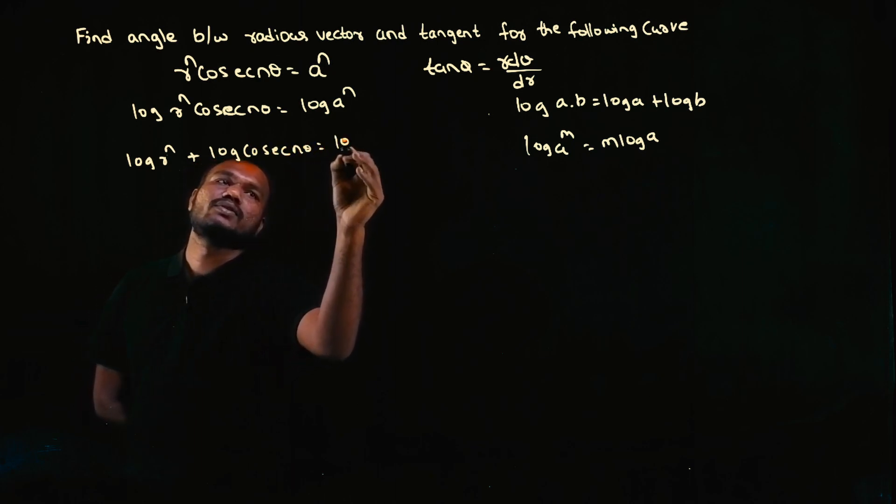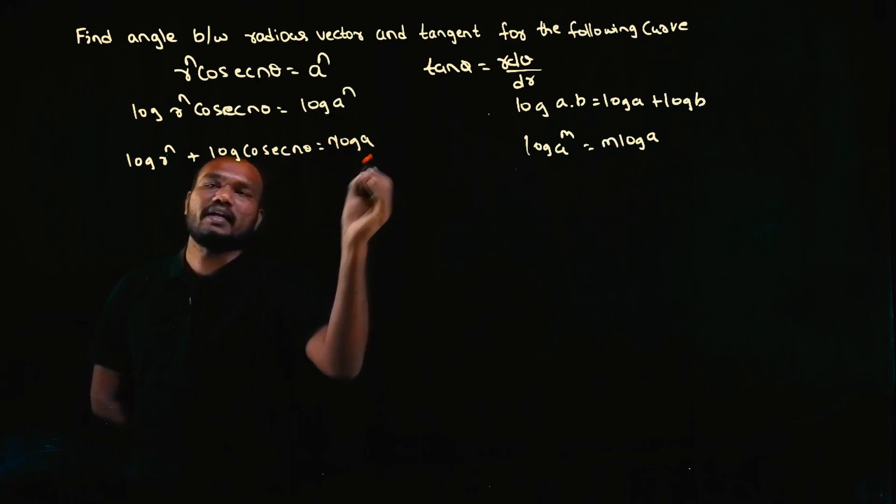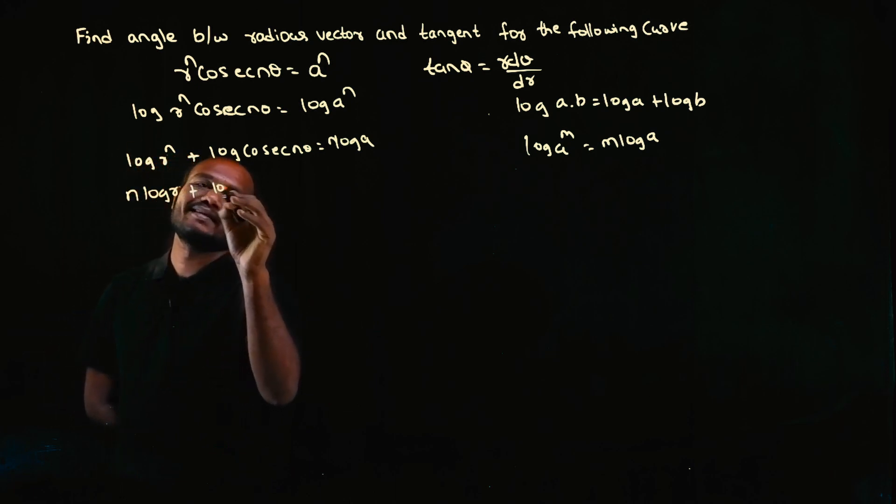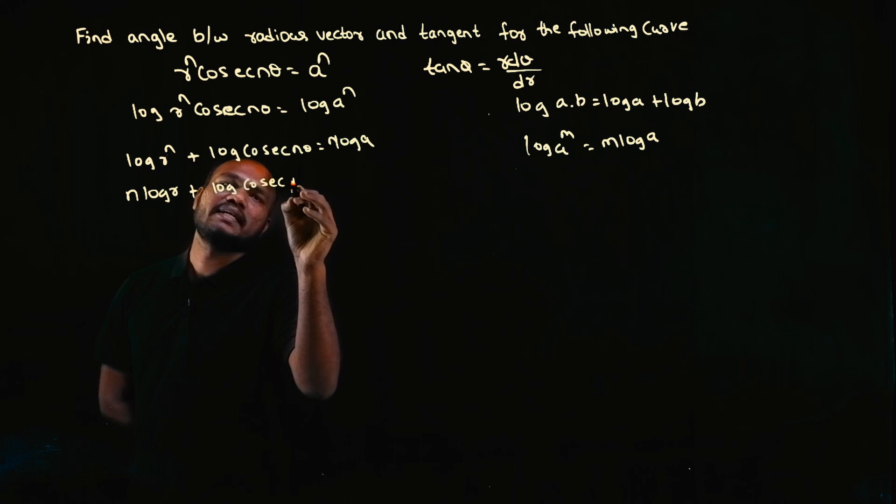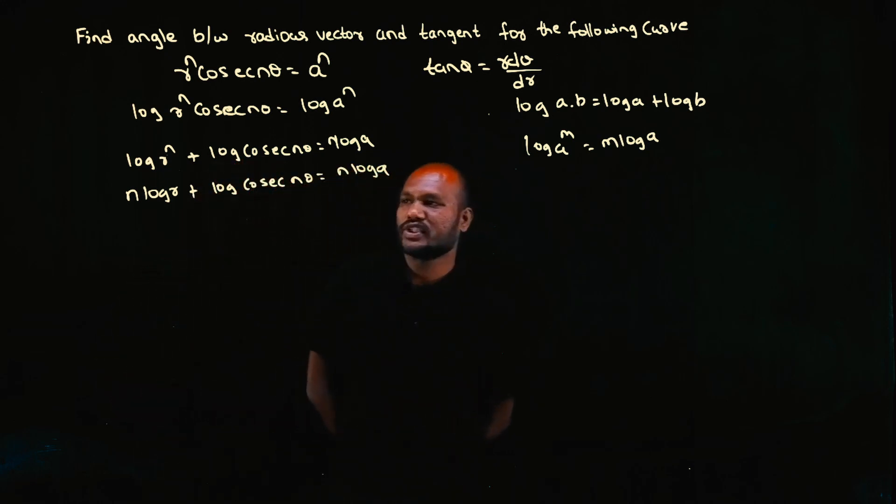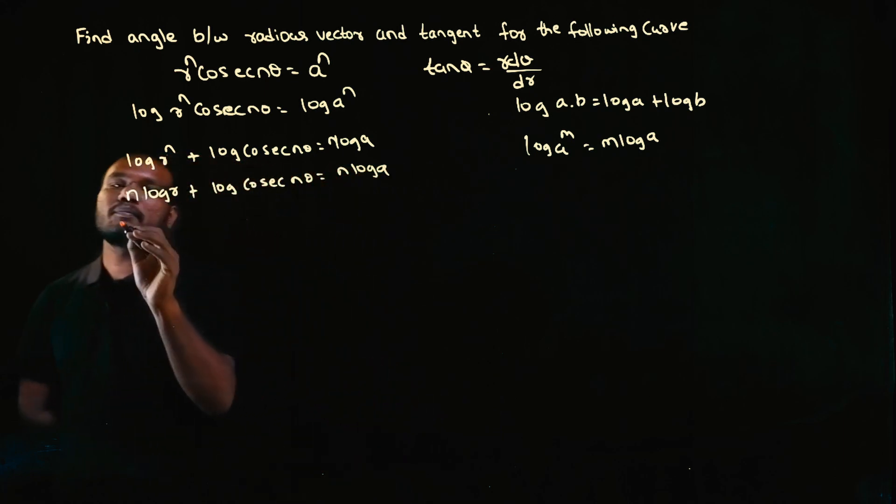So we'll bring the powers in front: n×log(r) + log(cosec(nθ)) = n×log(a). Log properties are done. Let's differentiate.